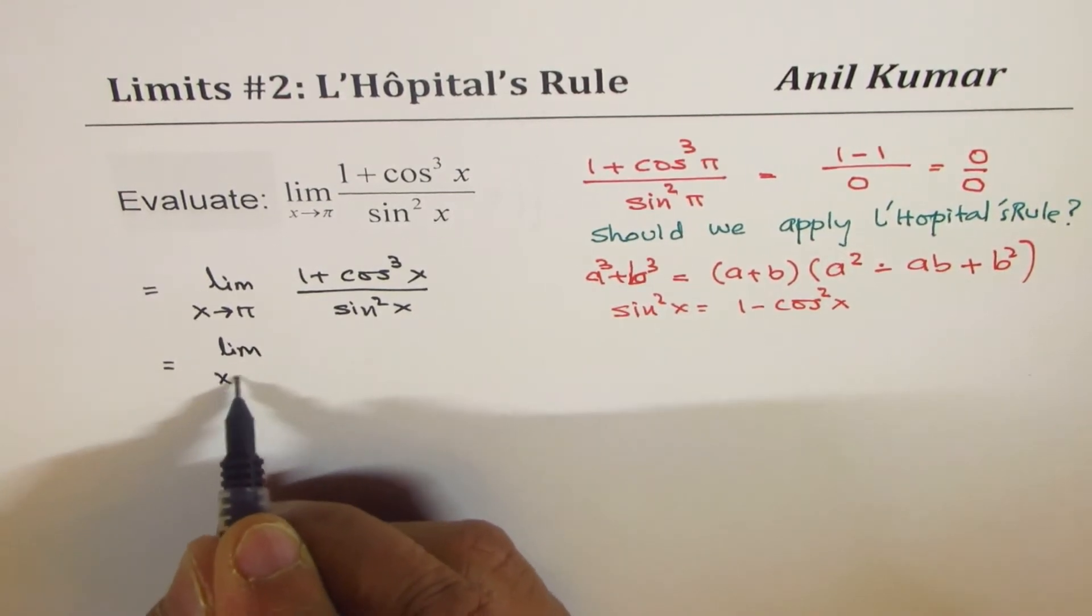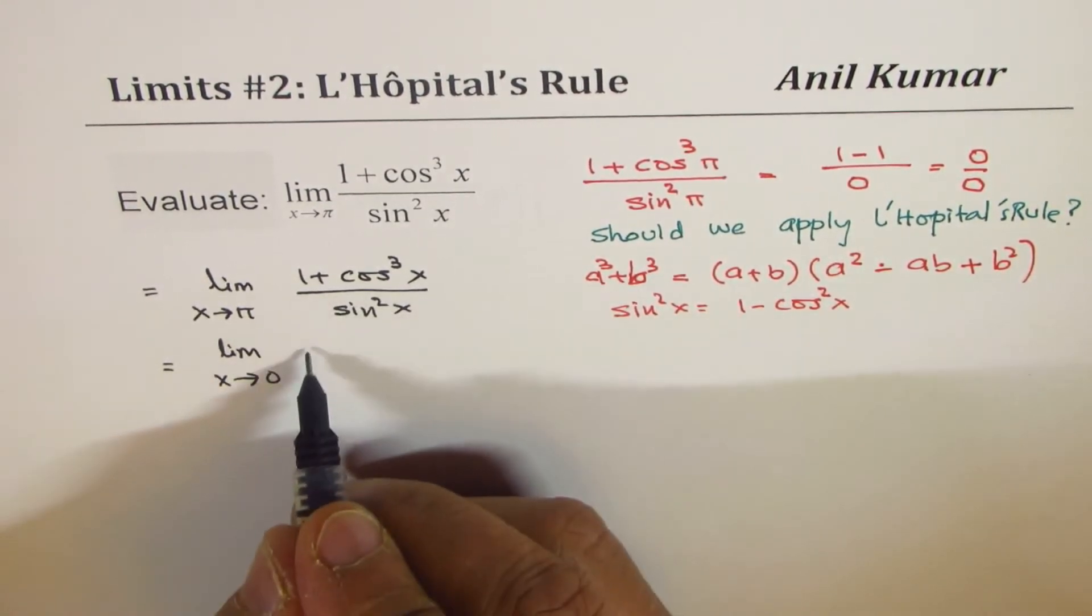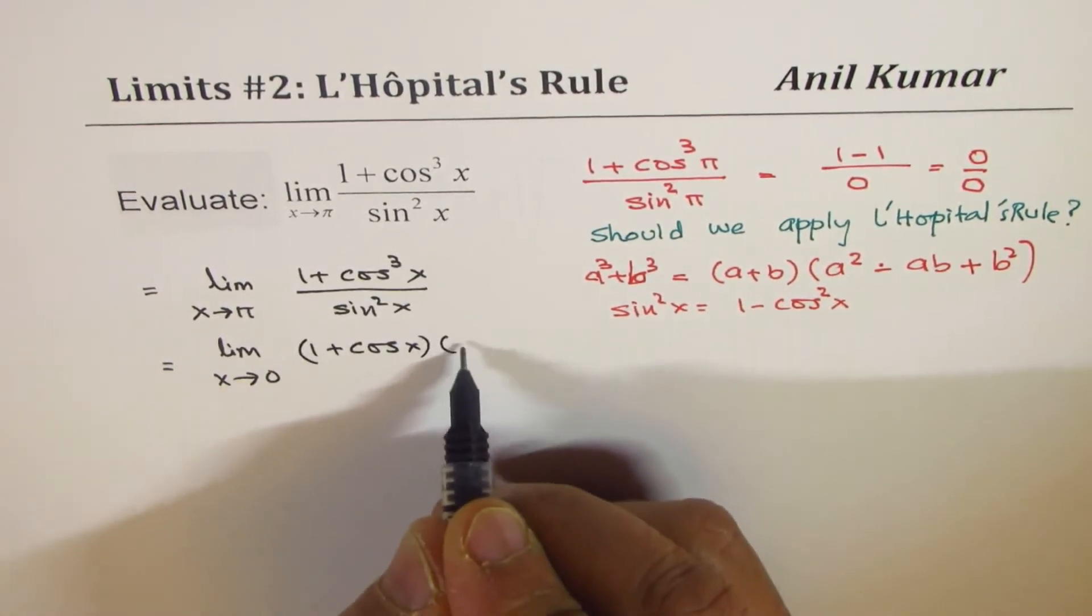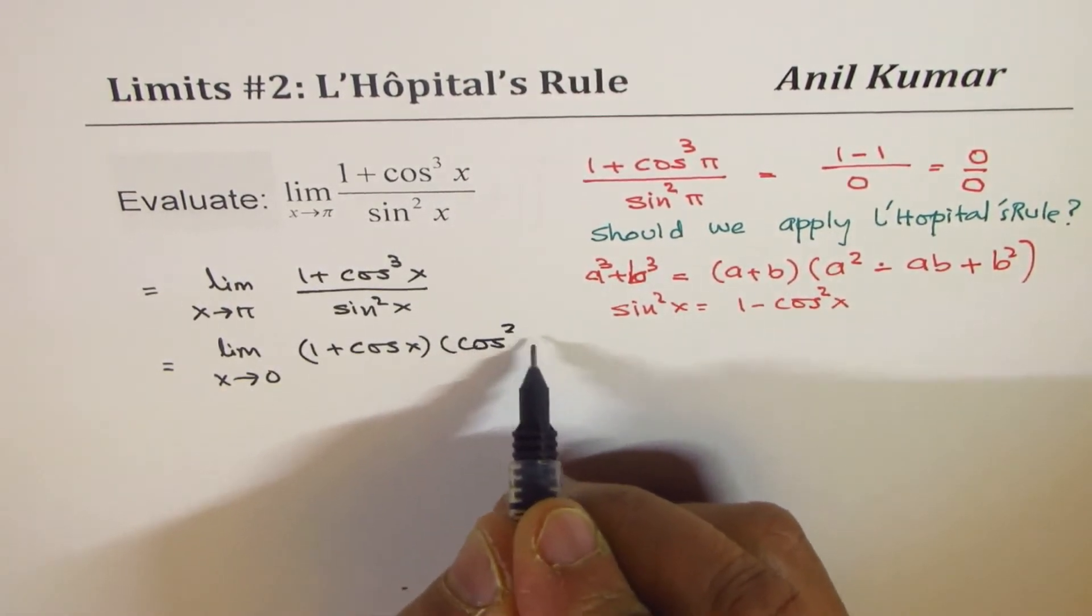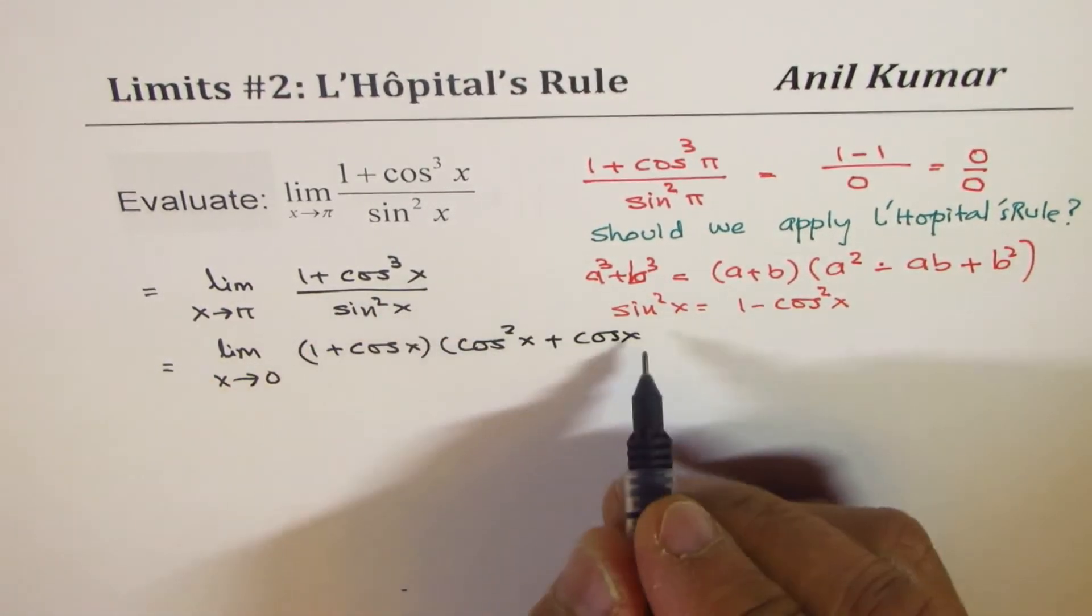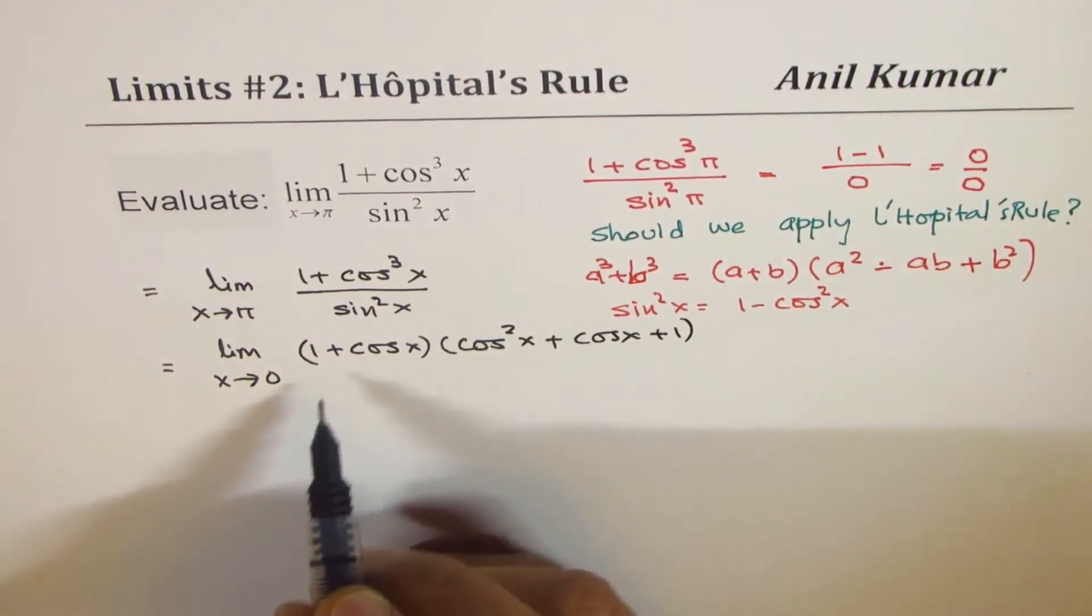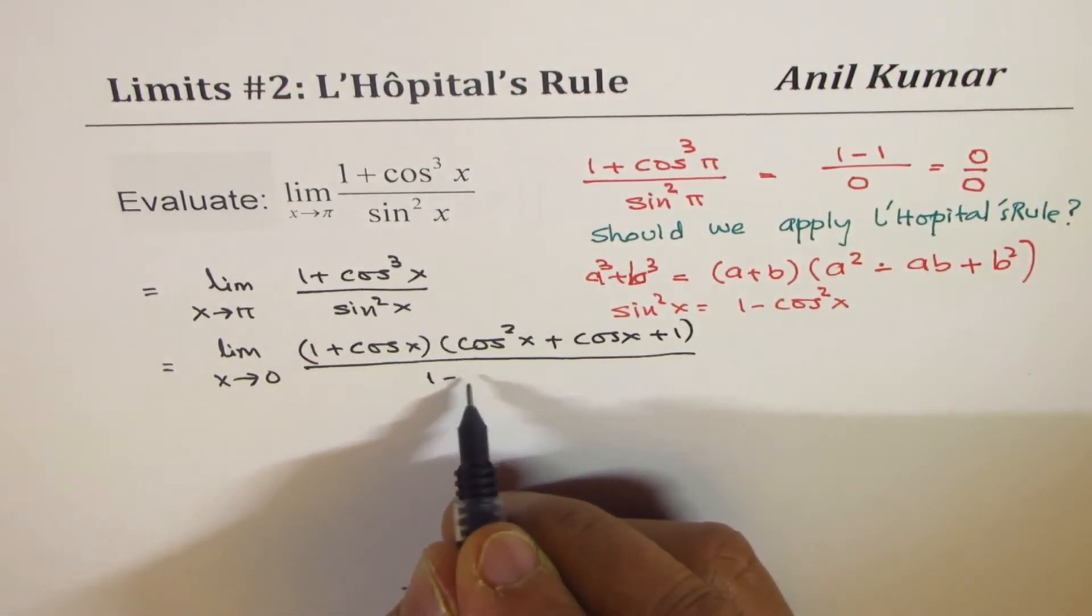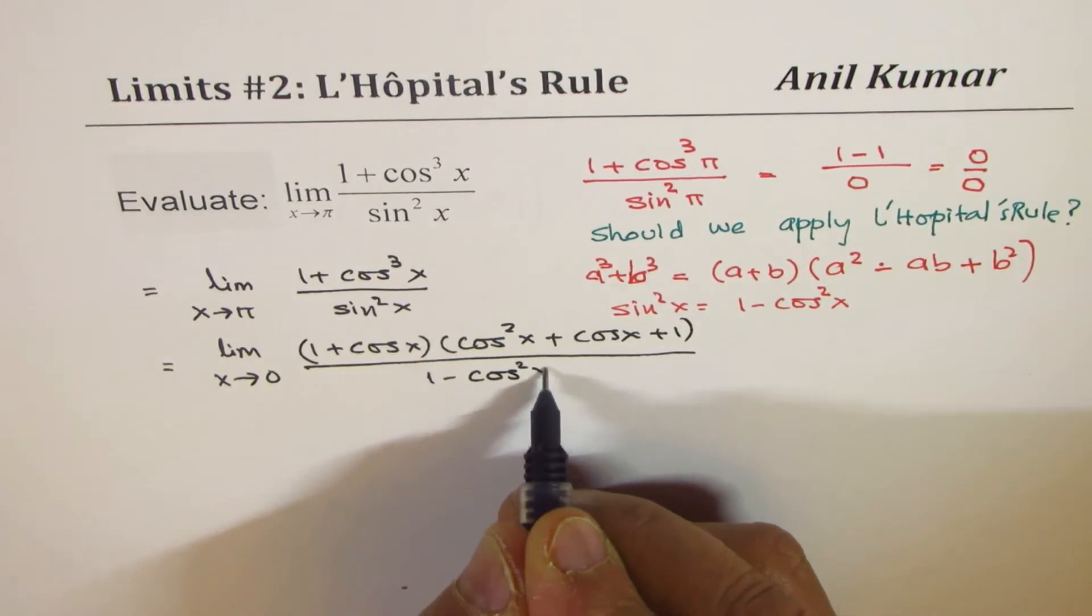The numerator could be written as (1 + cos x)(cos²x + cos x + 1) divided by sin²x, which can be written as 1 - cos²x.